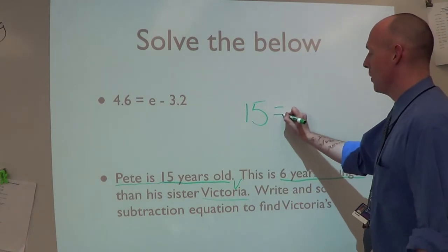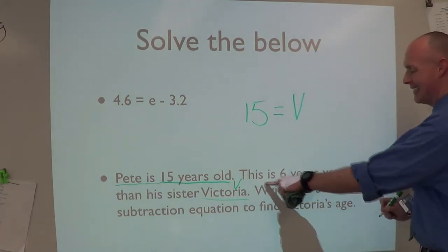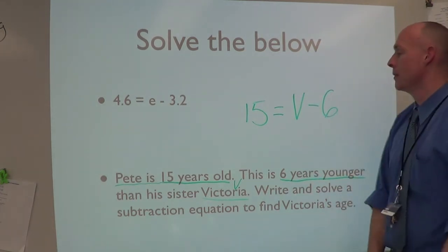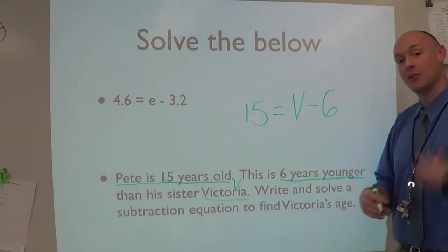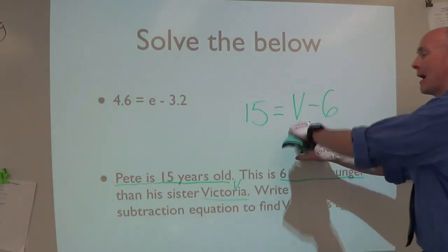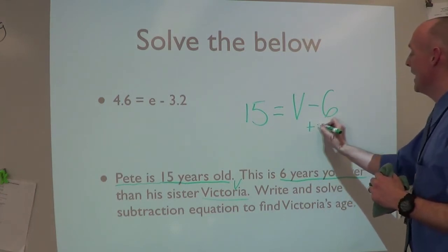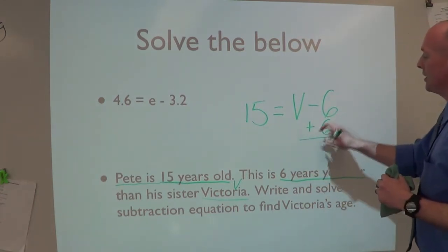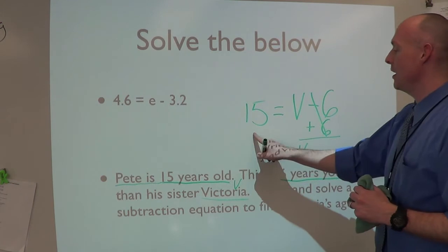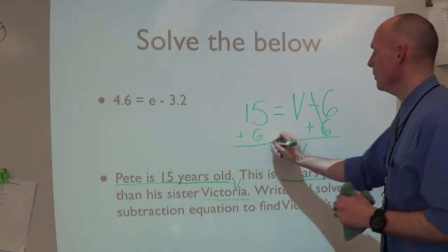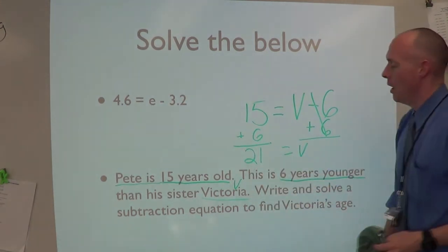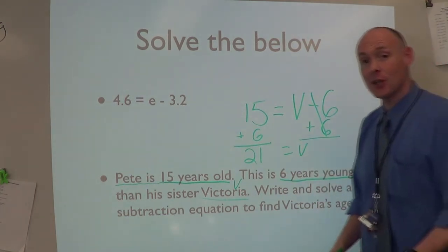So 15 equals v minus 6. This v is Victoria's age, and that's what we're going to try to figure out. I see minus 6 with a v. My goal is to get the v by itself, so I'm going to do the inverse - add 6. Minus 6 plus 6, they cancel each other out. We're left with v equals 15 plus 6, which is 21. 21 equals v.